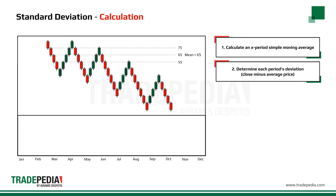The second step is to determine each period's deviation from this average. Our first close is 75 minus the average of 65, which results in 10. 65 minus 65 is 0. And our third point, 55 minus 65, results in negative 10.